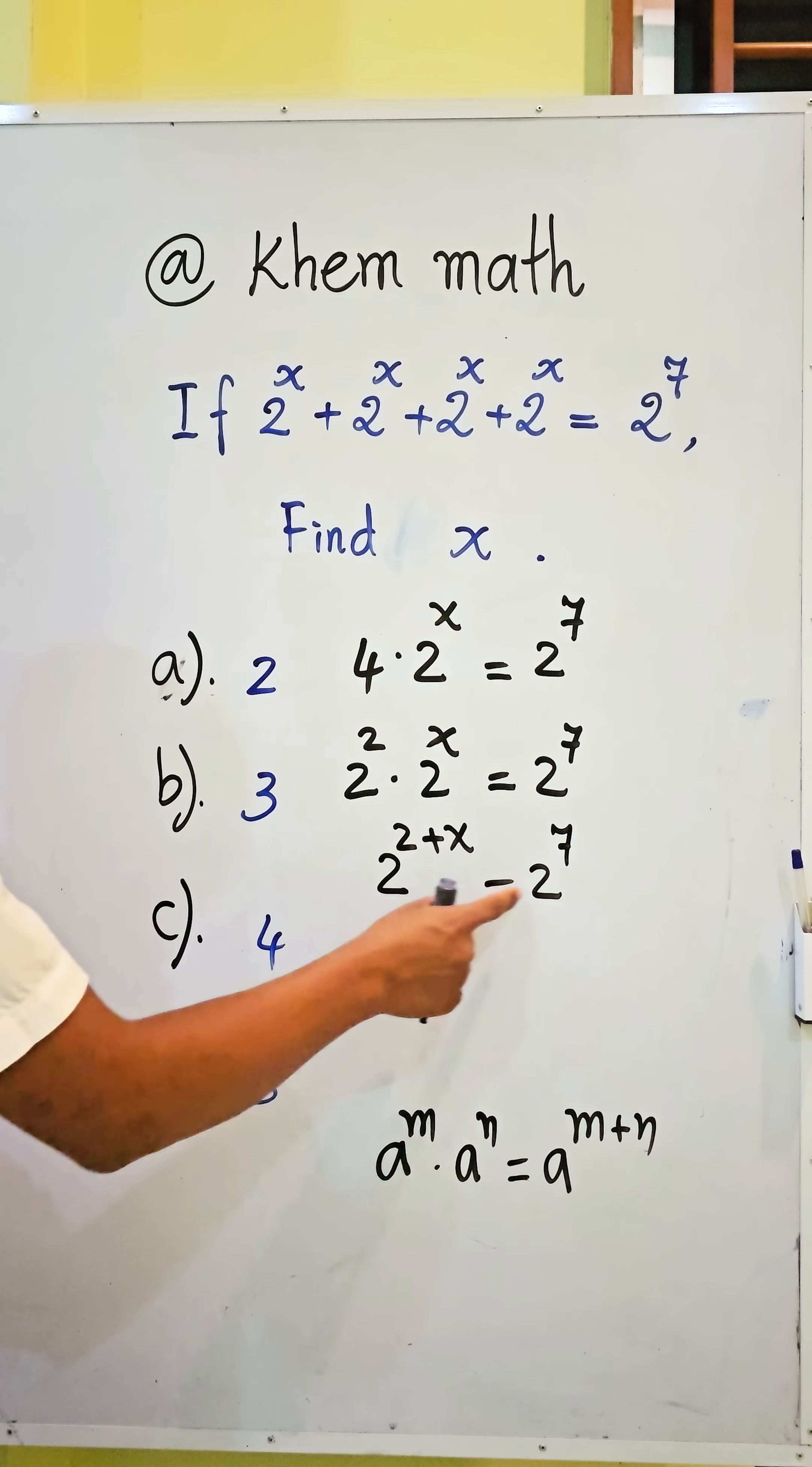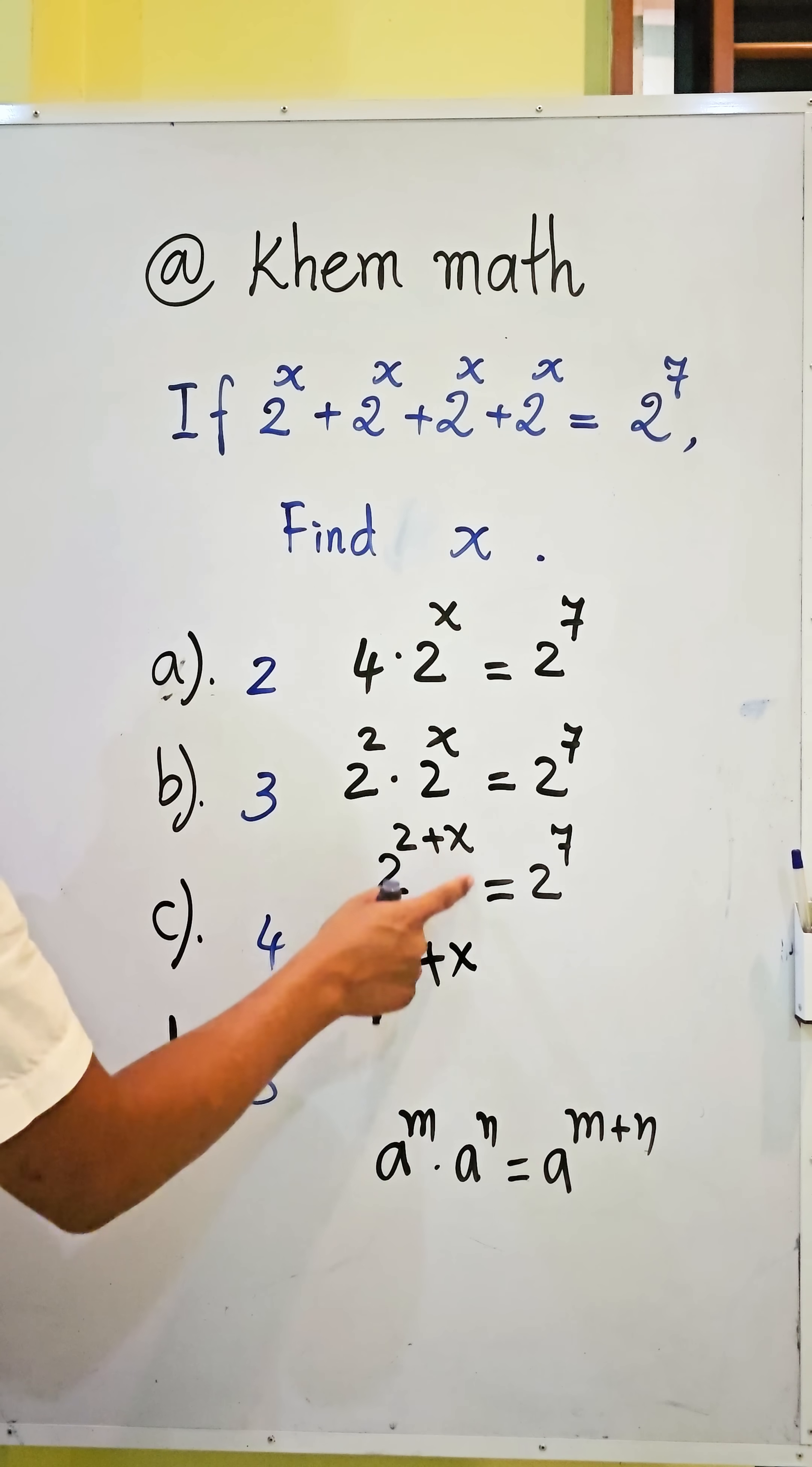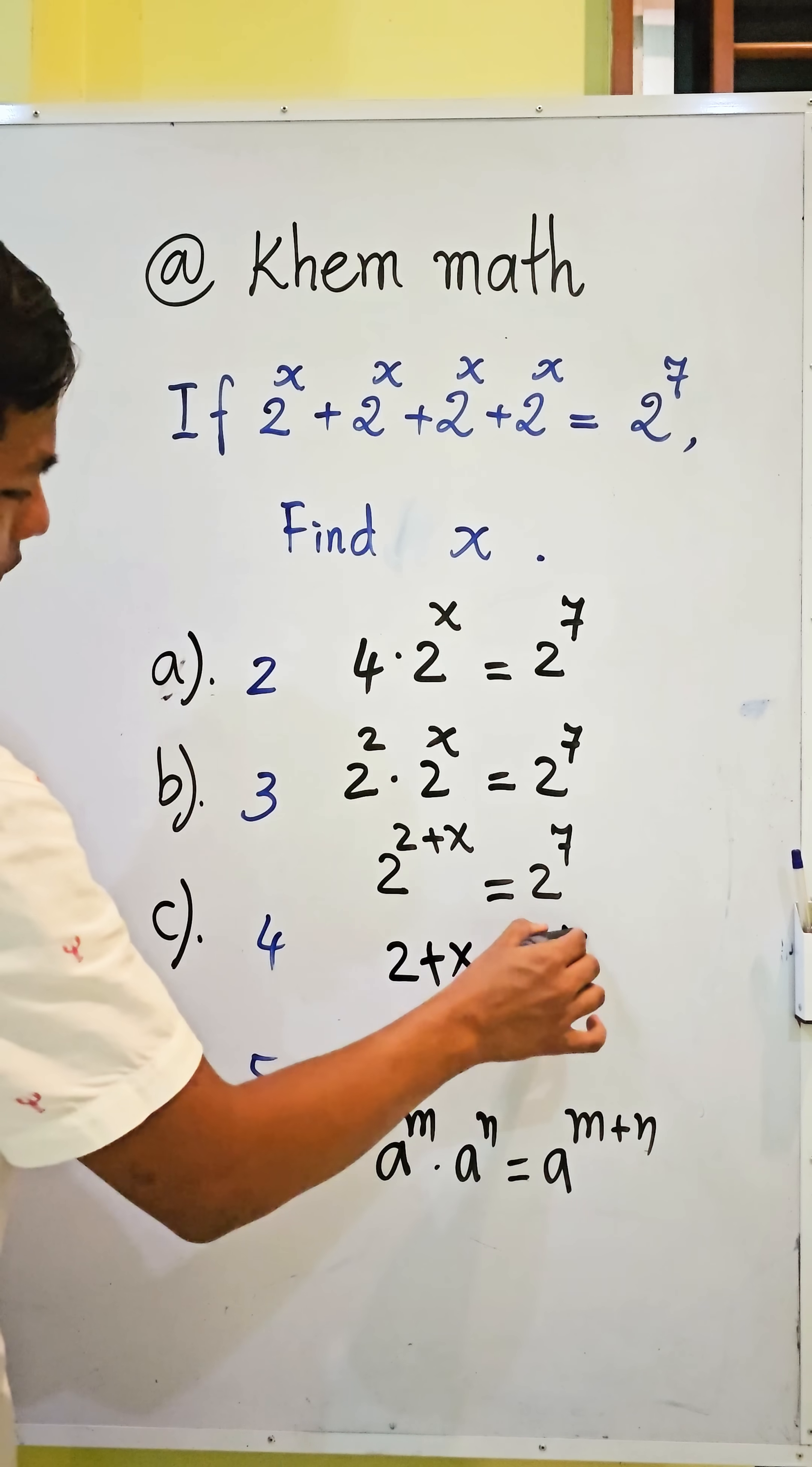So we see it's the same base. We get exponent equal to exponent. So we get 2 plus x equals 7.